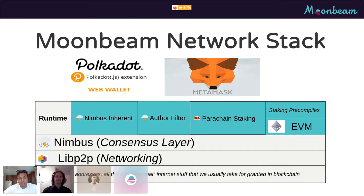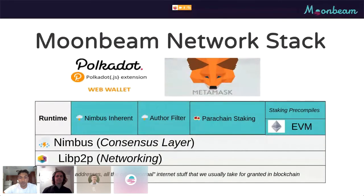This is a short overview of the Moonbeam network stack — we're only going to focus on the parts relevant to this talk. The important parts are the runtime. We'll be talking first about parachain staking and the functionality it provides, then we'll discuss the Nimbus consensus layer and some of the runtime logic used there. We'll end with a demo showing how we integrated staking precompiles to provide an interface for users to deploy their own smart contracts to interact with our staking palette.